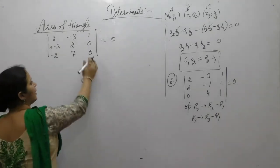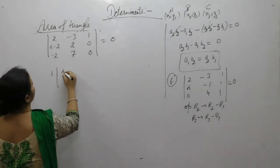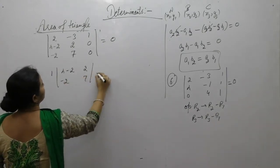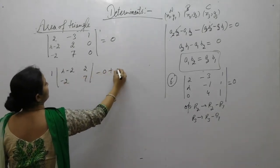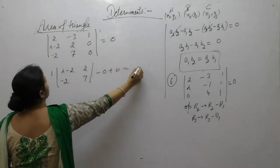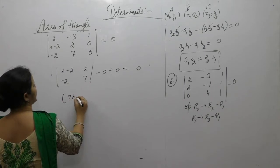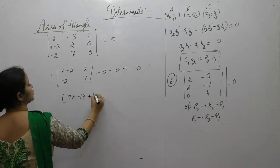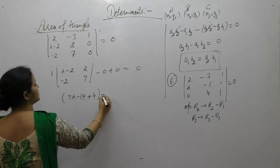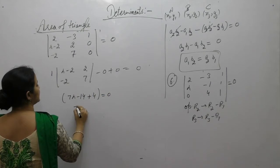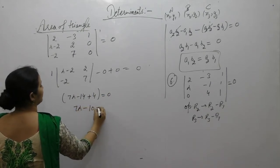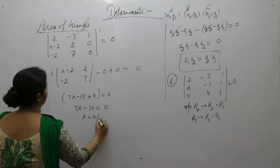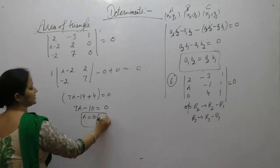Expand it along the third column. 1 into [(λ-2)(7) - (2)(-2)] = 7λ - 14 + 4 = 7λ - 10. Setting 7λ - 10 = 0 gives λ = 10/7.